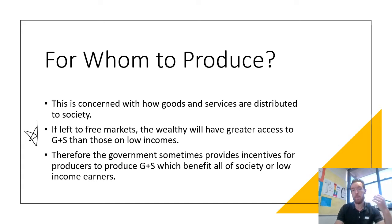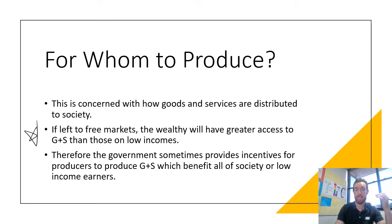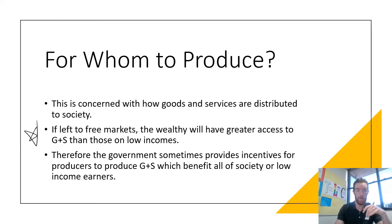For the most part, for whom to produce: businesses are going to produce for whoever has the money to pay for the goods and services they're making, but the government will sometimes give incentives to producers like subsidies or tax incentives so they produce goods and services that benefit all of society or low-income earners.